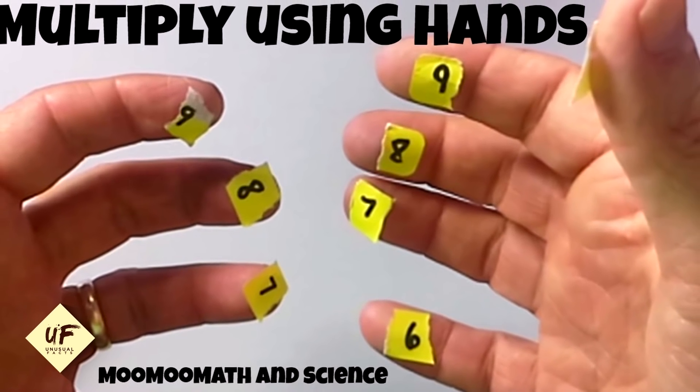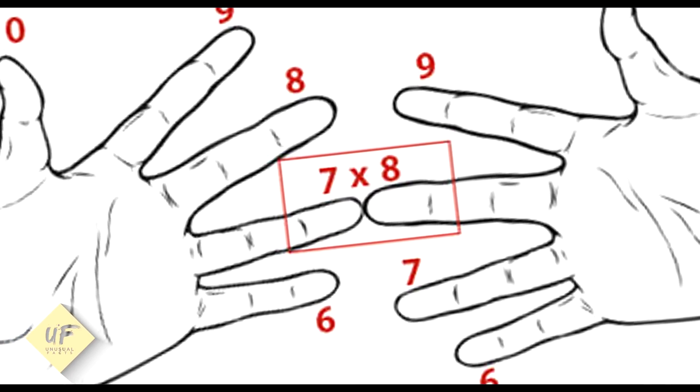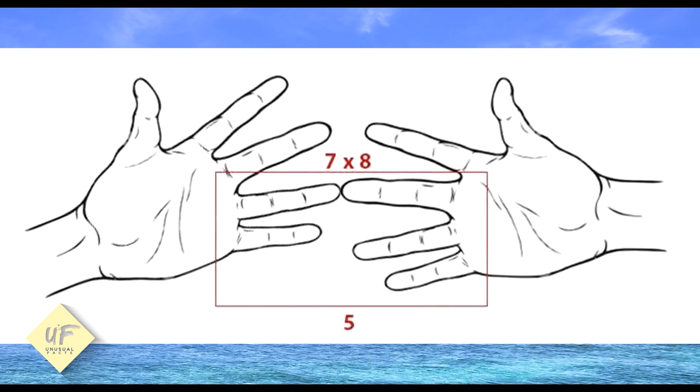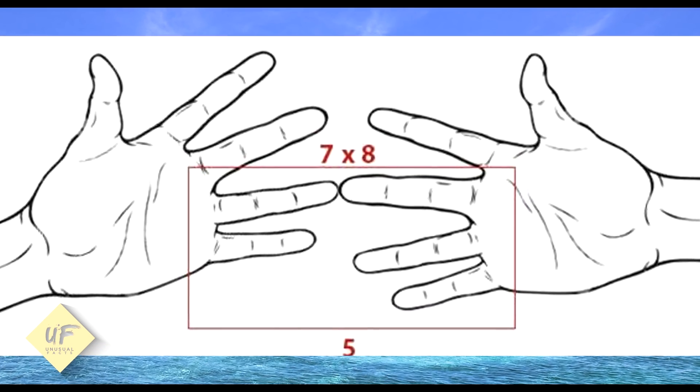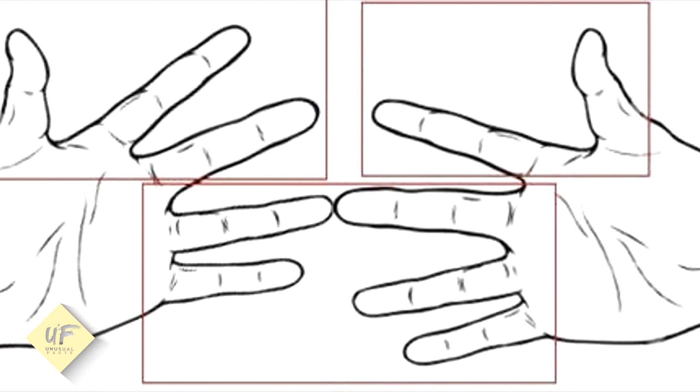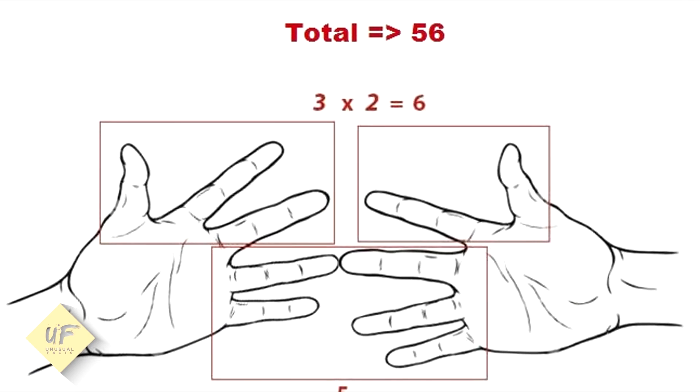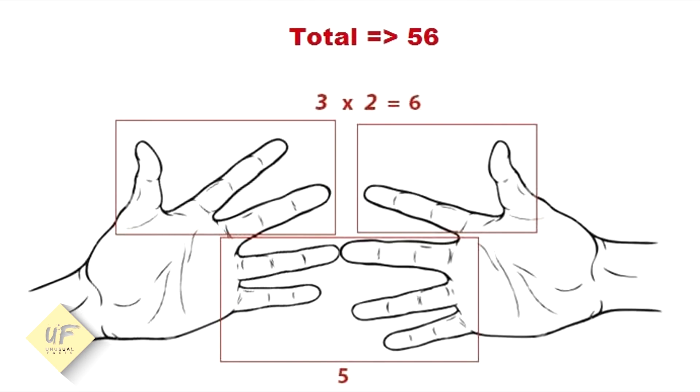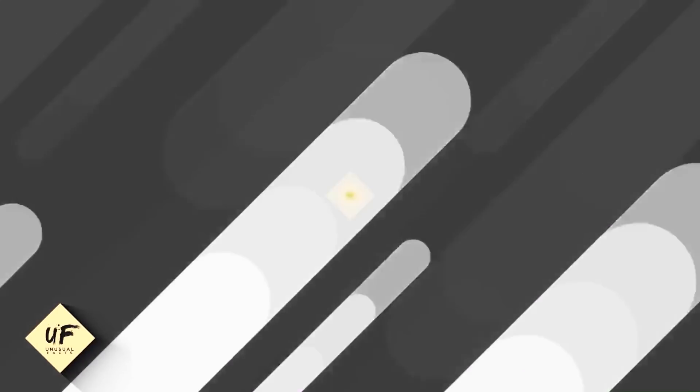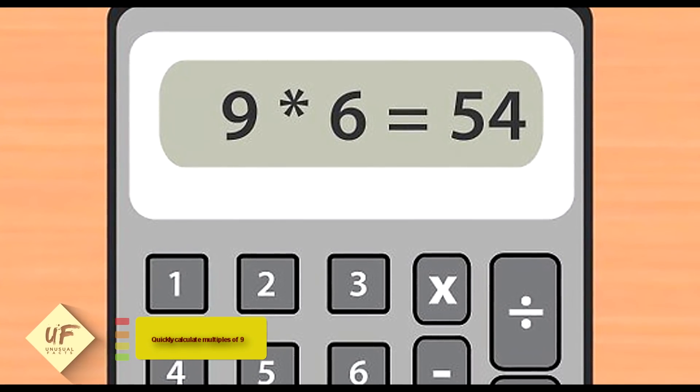Say for example you wish to calculate 7 times 8. Touch the assigned fingers. The number of fingers including the touching fingers is the tens, so this example of 5 fingers equals 5 tens or 50. Now multiply the remaining fingers to find the units. In the example, 3 fingers times 2 fingers equals 6. Add the units to the tens and you have the result: 56.